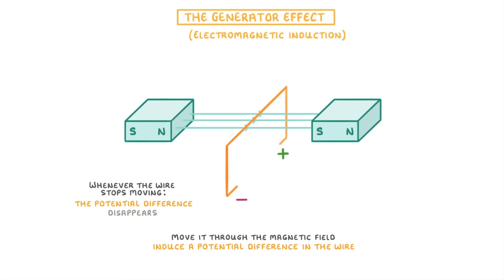This is because it's the change in the magnetic field that the wire experiences as it moves through it that creates the potential difference.